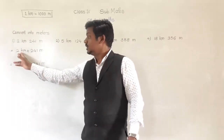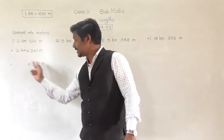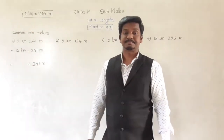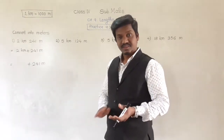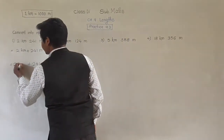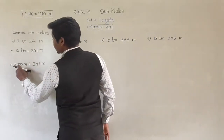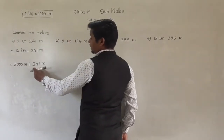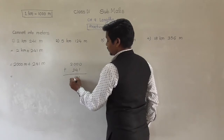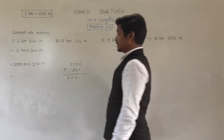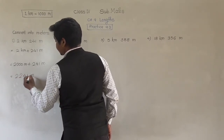We have to convert the length given in kilometers into meters, then add both lengths. So 2 kilometer means how many meters? 1 kilometer means 1,000 meters, so 2 kilometer means 2,000 meters. Now 2,000 plus 241: 0+1=1, 0+4=4, 0+2=2, and 2. So 2,000 meters plus 241 meters equals 2,241 meters.